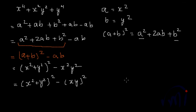And then we have a formula: a square minus b square is a minus b multiplied by a plus b. And in this case, we are going to assume a as x square plus y square and b we are going to assume as xy.